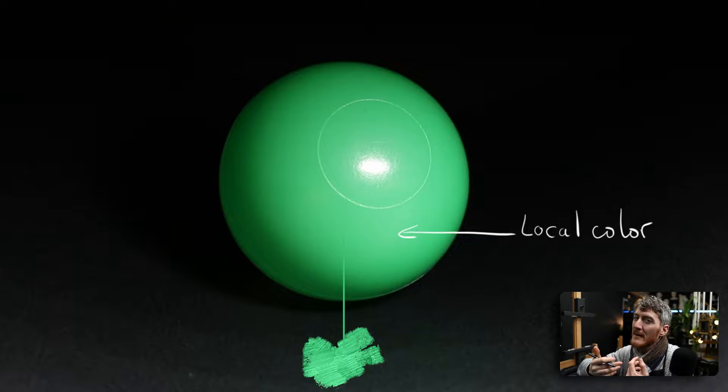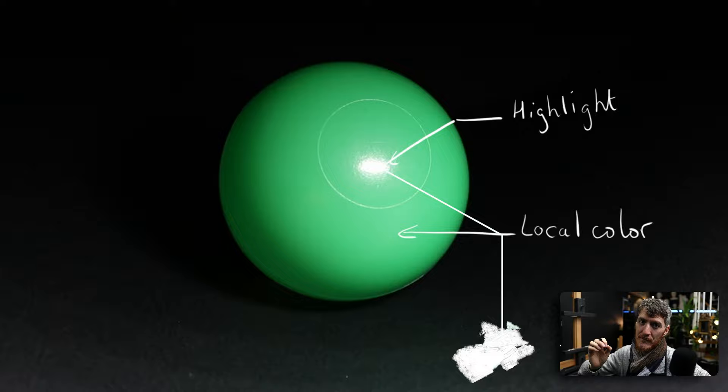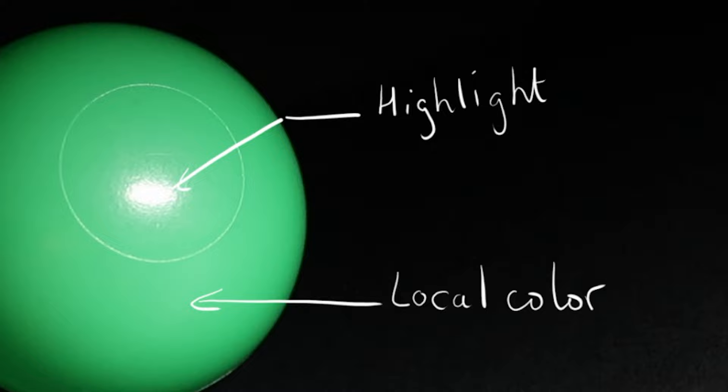The local color is the color of the object unaffected by strong lights or shadows — it's the normal color of the object. Next is the highlight, which is a reflection of the light source on the surface of the object. Imagine that my light source is red — in that case the highlight would be red or reddish. The size and appearance of this specular highlight really depends on whether the object is glossy or matte.